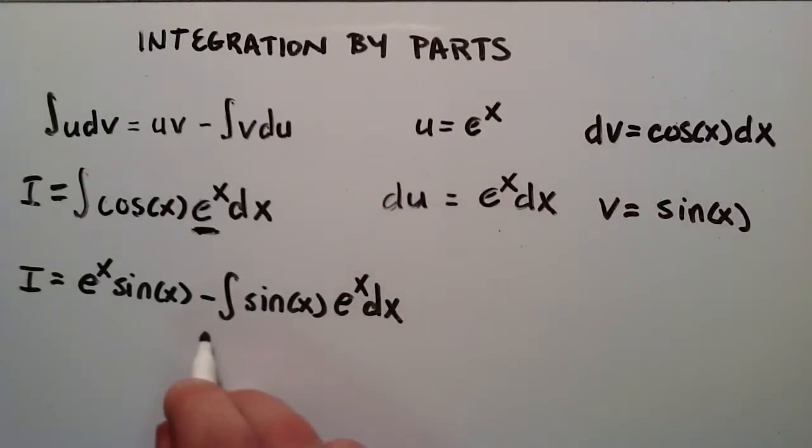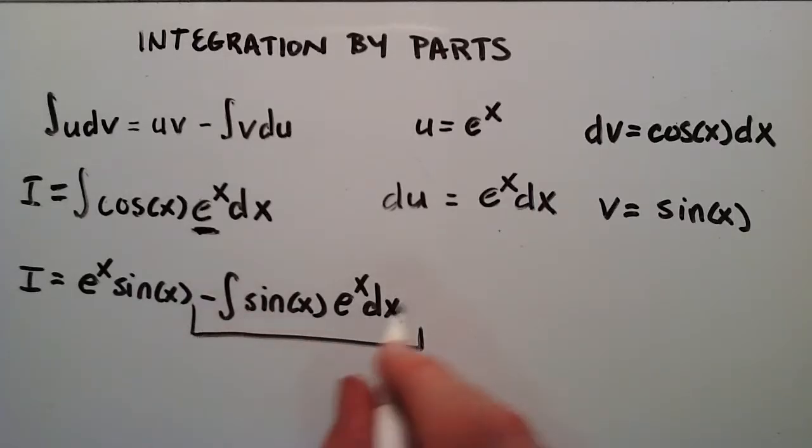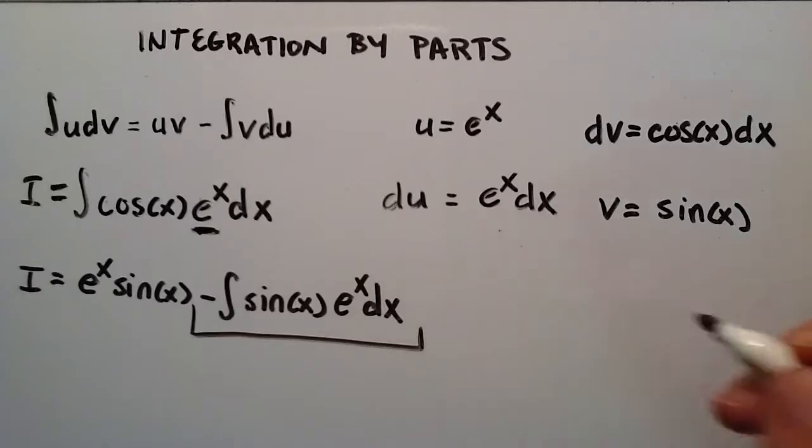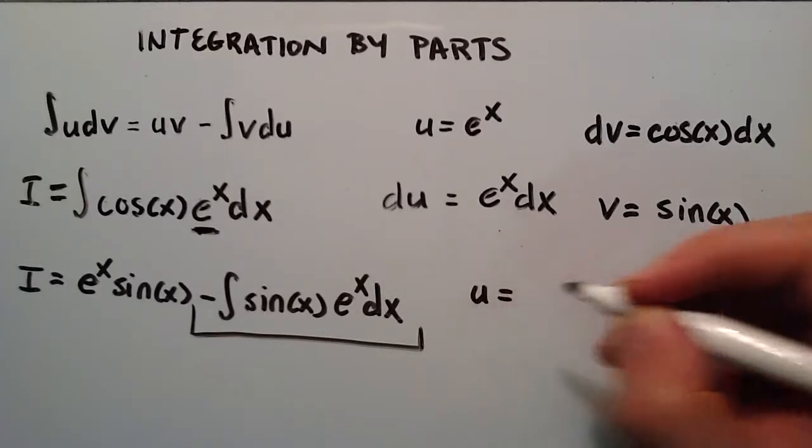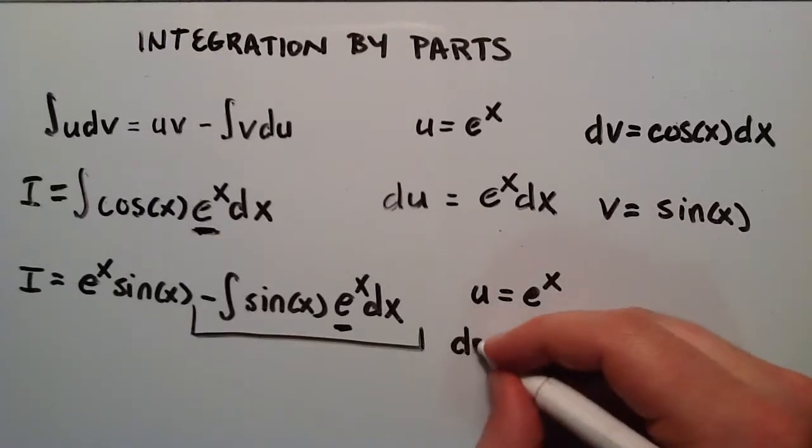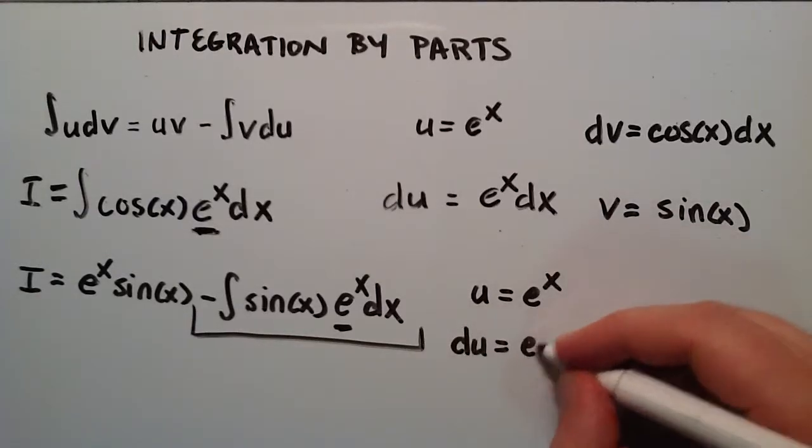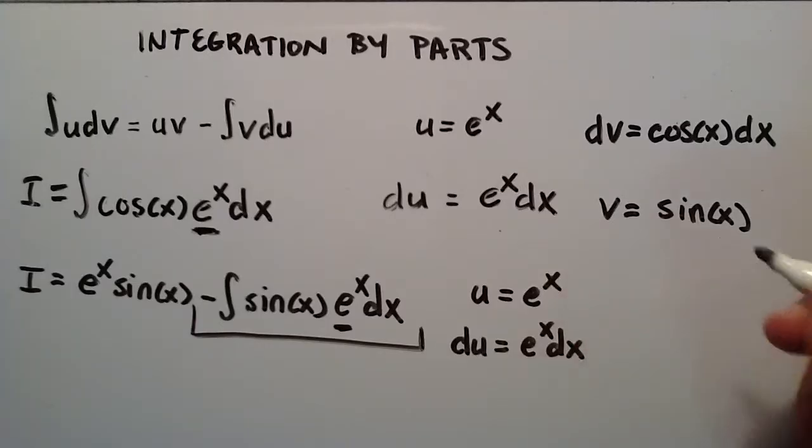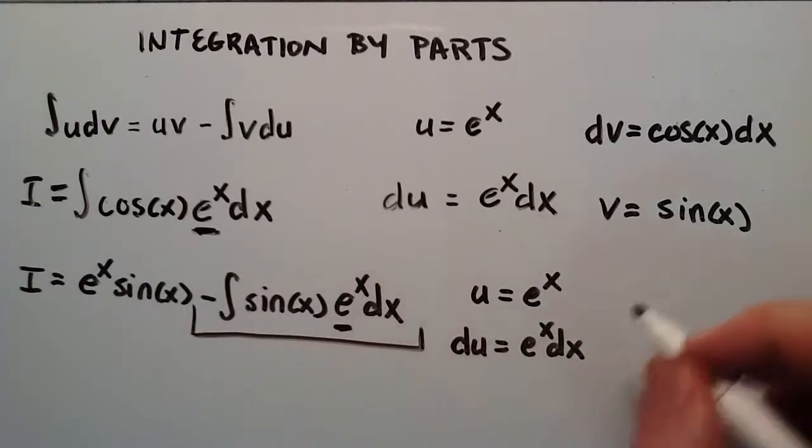So now what we're going to do is we're going to take the integral of this. We're going to do integration by parts one more time on this integral. And I'm going to even include the minus sign when I'm defining my u's and v's over here. So for u, I'm just once again going to pick the e to the x part. Which means that du is equal to e to the x dx once again.